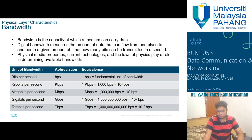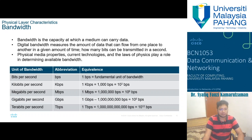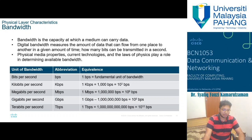When we talk about the physical performance of a network, we usually talk about bandwidth. Bandwidth is the capacity at which a medium can carry data. Digital bandwidth measures the amount of data that can flow from one place to another in a given amount of time — how many bits can be transmitted per second. Physical media properties, current technology, and the laws of physics all play a role in determining available bandwidth, such as 10 Mbps or 100 Mbps services.